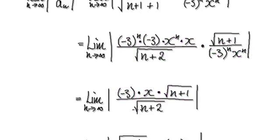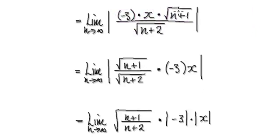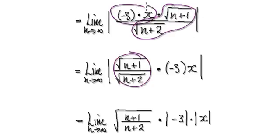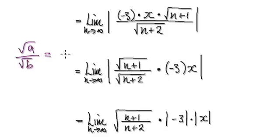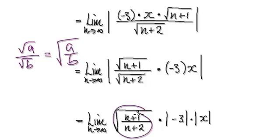Now group all the n terms together. That will then give you this fraction here. And then you've got this, which will be this. Square root of a over square root of b is the same as root of a over b, which will give you this. And then you can take it out.